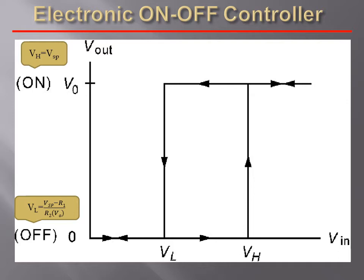Mathematically, the on-state of the controller is given by Vh is equal to Vsp, where Sp is the setpoint. And the off-state of the controller is given by VL is equal to Vsp minus R1 divided by R2 into V0.